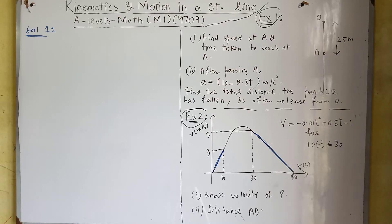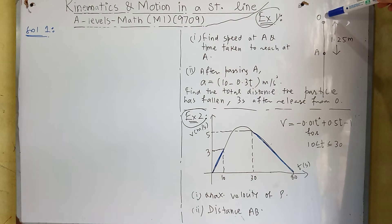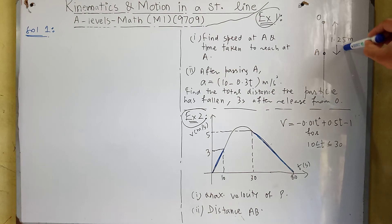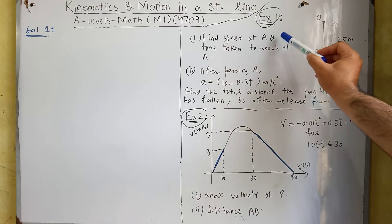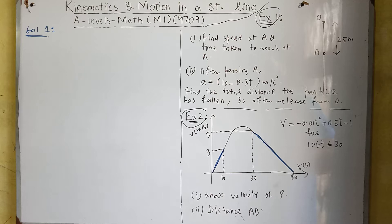We are doing kinematics and motion in a straight line. Now we have some examples related to these concepts. In example one, a particle P is released from point O, and the distance between point O and point A is 1.25 meters. We need to find the speed of the particle at point A and the time taken for the particle to reach point A.